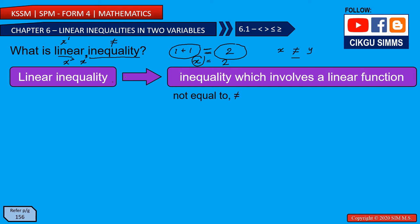The definition of a linear inequality is an inequality which involves a linear function. And in two variables, we have x and y, or a and b, or p and q — it depends on the question.